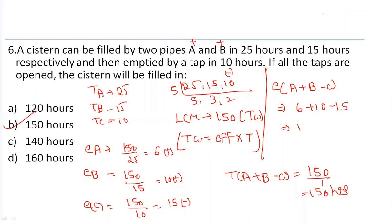The time taken by A, B, and C together to fill the tank is total work divided by combined efficiency: 150 divided by 1, which equals 150 hours. So the answer is option B: 150 hours. The tank will be filled in 150 hours when all taps are open together.